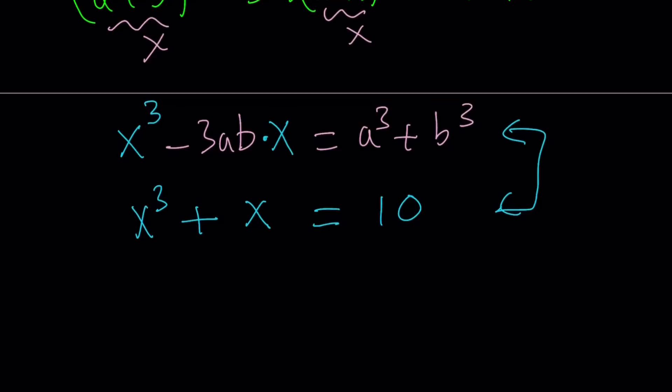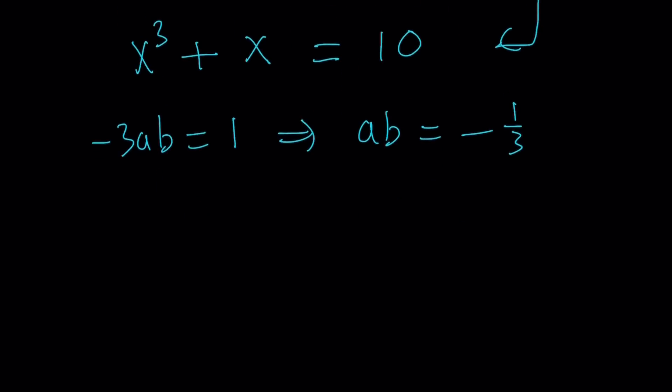Great. So let's go and compare these two equations. Comparison shows us -3ab = 1, which is the coefficient of x in both equations, which indicates ab = -1/3.